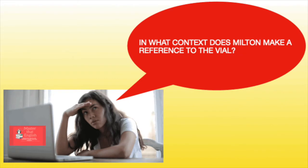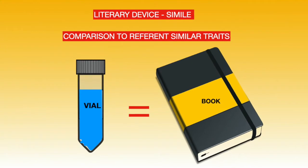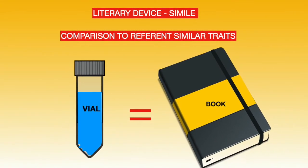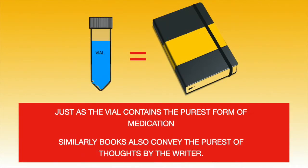In what context does Milton make a reference to the vial? A vial is a small cylindrical glass capsule that contains medicine. Just as the vial contains the purest form of medication, similarly books also convey the purest thoughts of the writer.